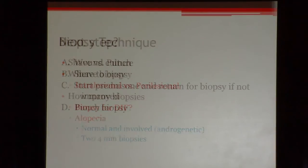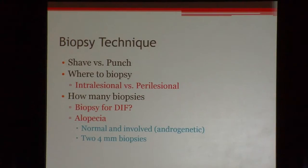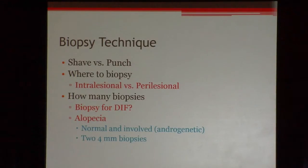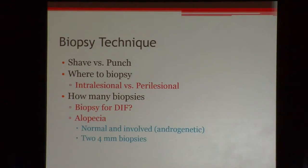If you chose a biopsy, shave or punch? The ideal biopsy is a punch biopsy. You need to get the full dermis and sometimes even go into the subcutaneous tissue if you're looking for something like panniculitis — your dermatopathologist needs to see the fat. You need to see the entire dermis, the vascular plexus, and the adnexal structures. A shave biopsy is not usually appropriate for any sort of inflammatory dermatosis.